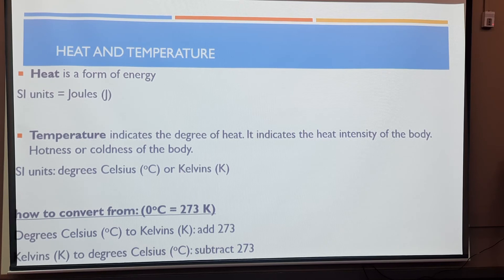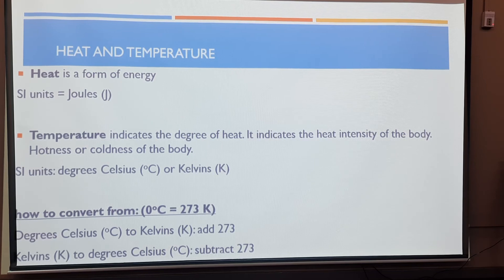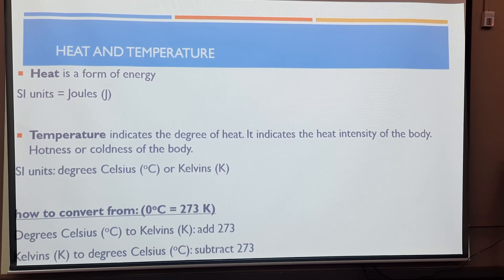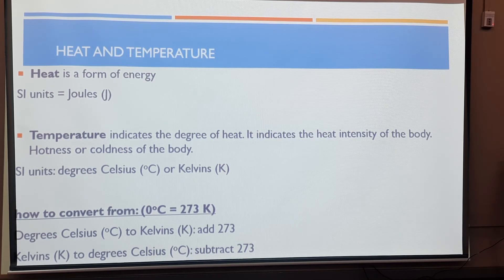You need to be able to convert degrees Celsius to Kelvins and vice versa. Take note that zero degrees Celsius is equivalent to 273 Kelvins. That is illustrated on page 124, figure 5.10. So if you have degrees Celsius and you want Kelvins, you simply add 273 to the value you have in degrees Celsius. And if you want to convert Kelvins back to degrees Celsius, you simply subtract 273 from the Kelvins value.